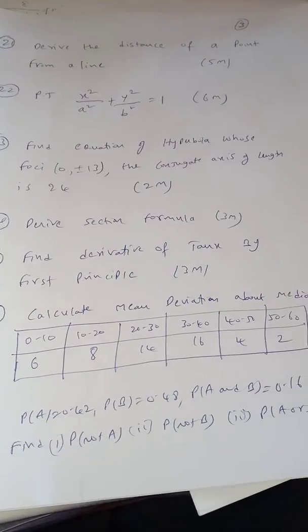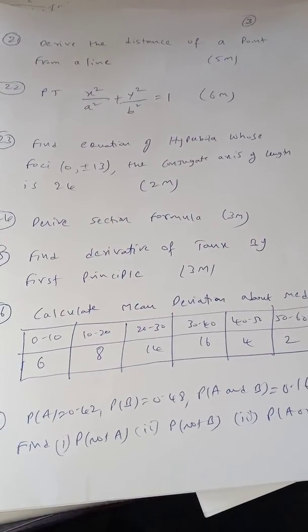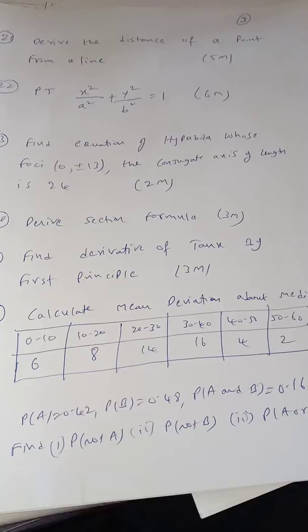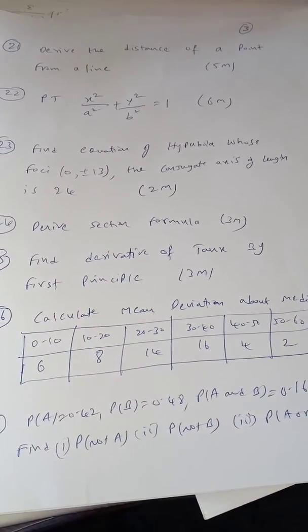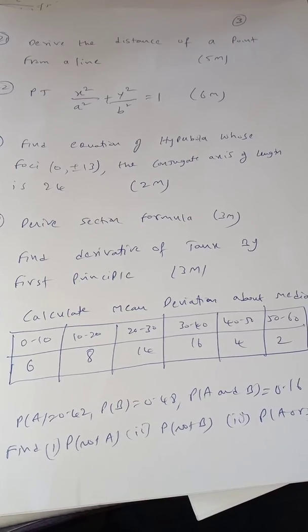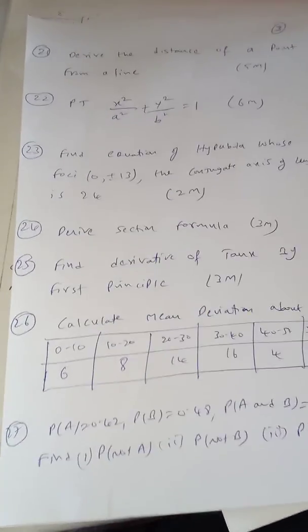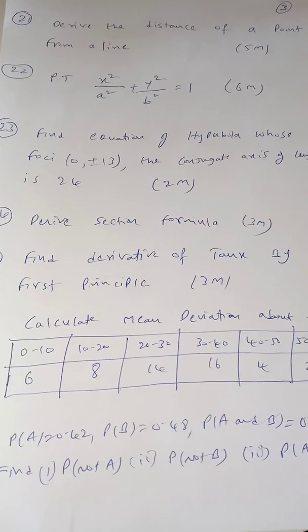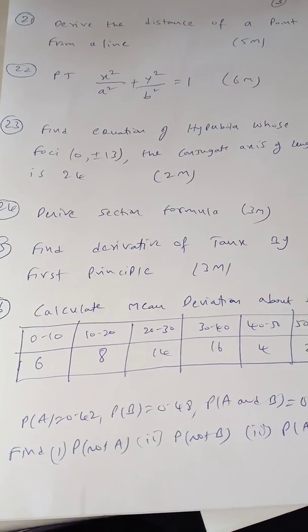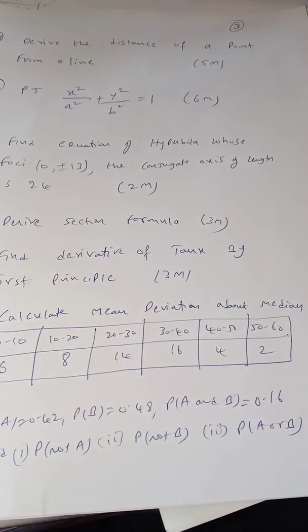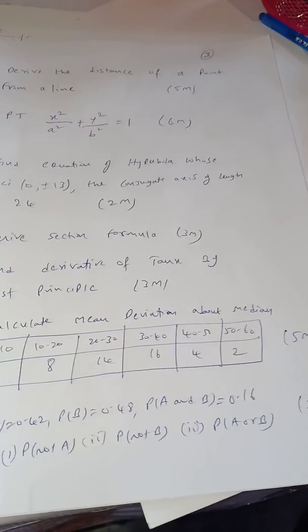Question number 26, calculate mean deviation about median. They given limit 0 to 10, 10 to 20, 20 to 30, 30 to 40, 40 to 50, 50 to 60, and the frequency given 6, 8, 14, 16, 4, 2. Question 27, P of A is 0.42, P of B is 0.48, P of A and B is 0.16. Then find P of not A, P of not B and P of A or B. It is a 3 mark question in probability.